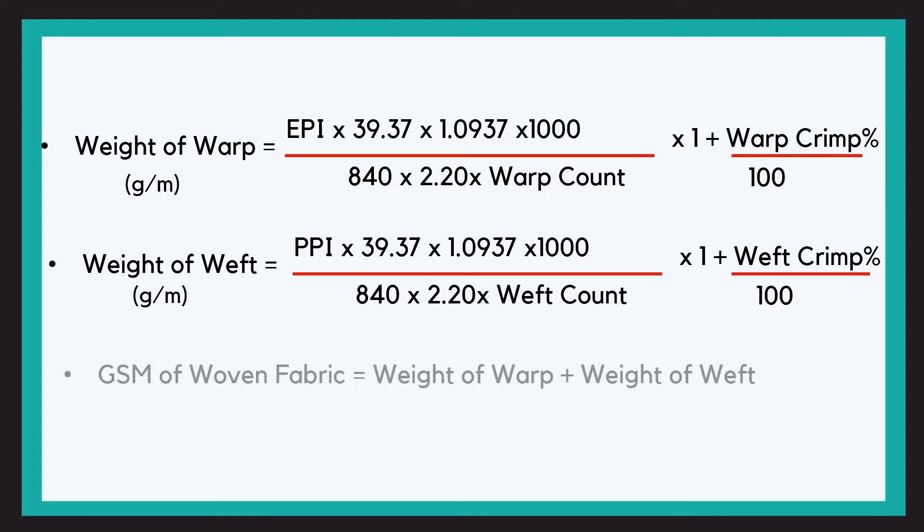To find the GSM, the weight of warp in grams per one meter plus weight of weft in grams per one meter, we will add that to get GSM, that is grams per square meter of the fabric. Let's see this with an example.